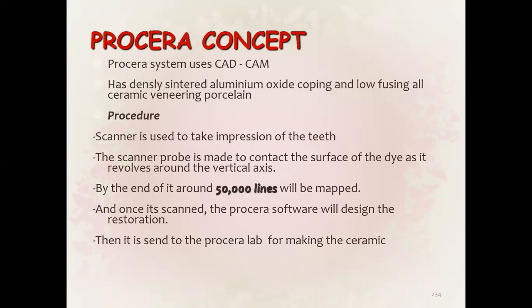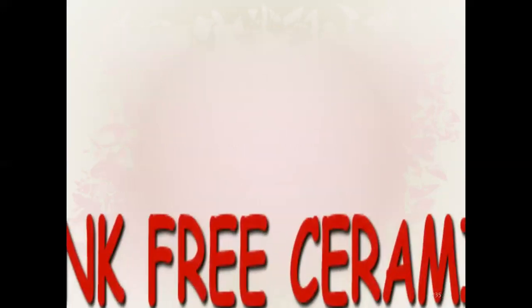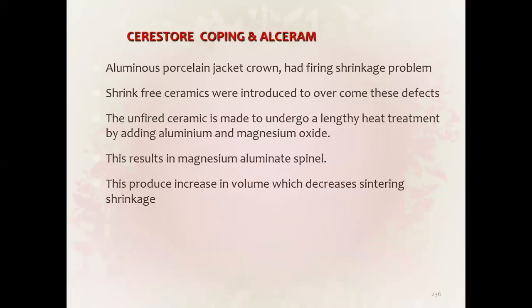The Procera scanner takes the impression of teeth; the scanner probe contacts the surface of the die as it revolves around the vertical axis. At the end, 50,000 lines are mapped, and the processor software designs the restoration, which is then sent to the processor lab for making the ceramic. Shrink-free ceramics include Cerestore coping and Alceram.